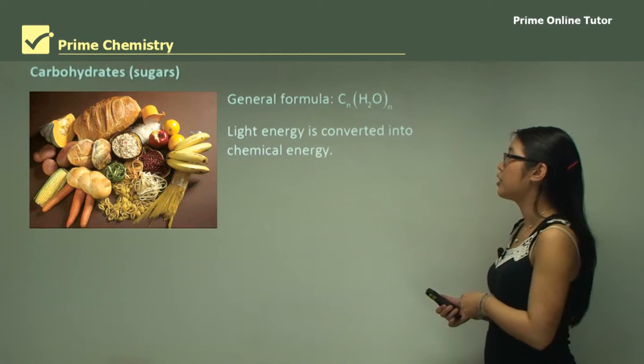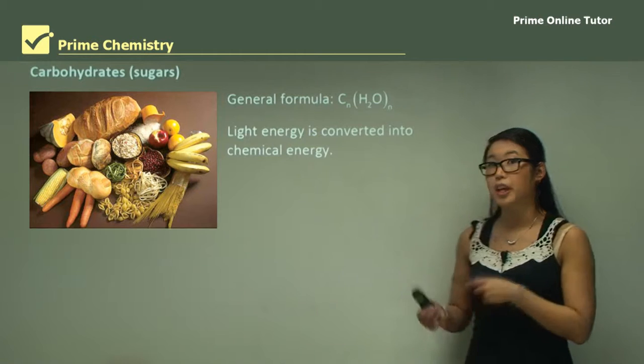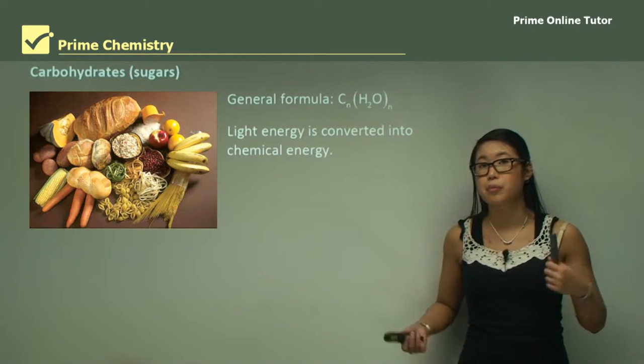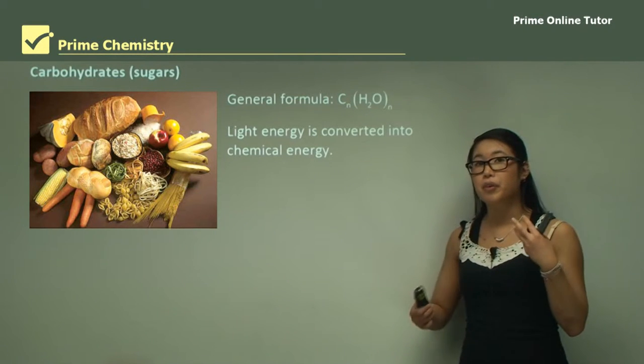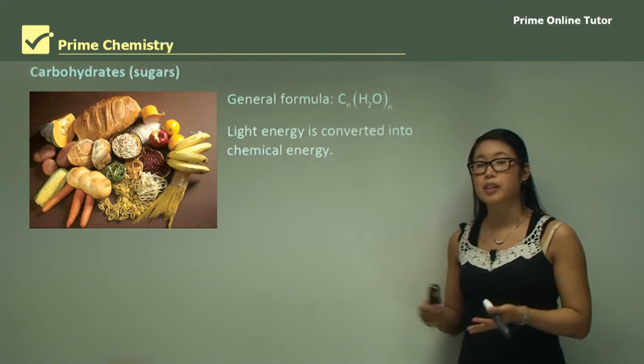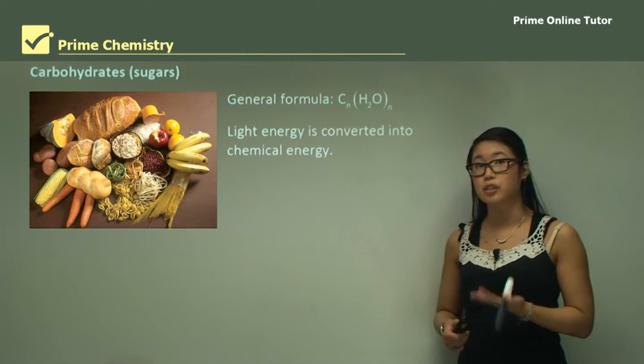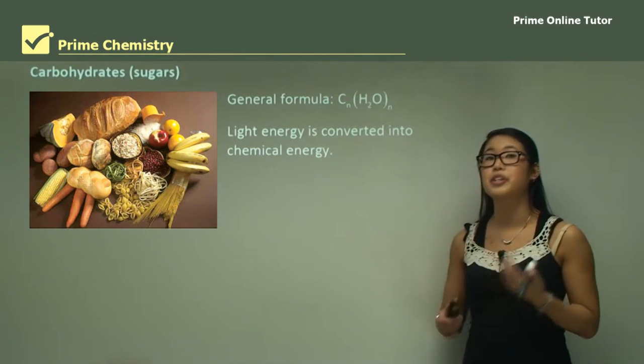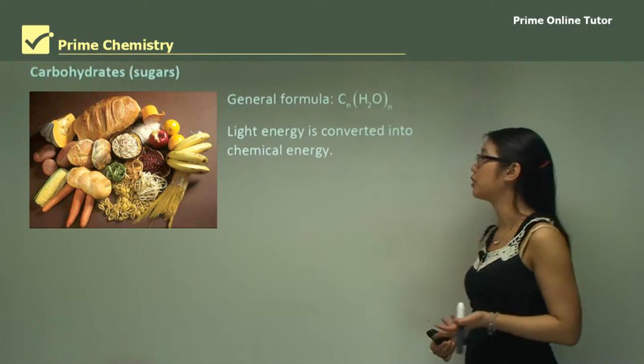Light energy is converted into chemical energy. Remember when we convert energy, no energy is destroyed — but energy can be transferred and lost to the surroundings.